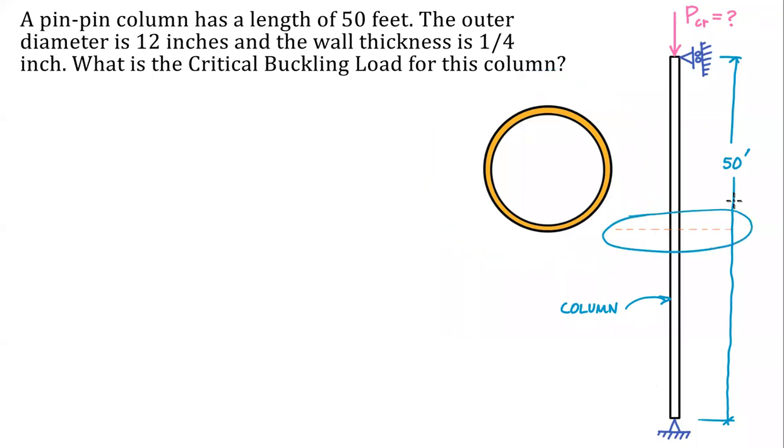So essentially we're cutting through this orange plane and looking at that cross section. We have a hollow cylinder and we're given a diameter, an outer diameter, outer diameter of 12 inches and a wall thickness of a quarter inch.